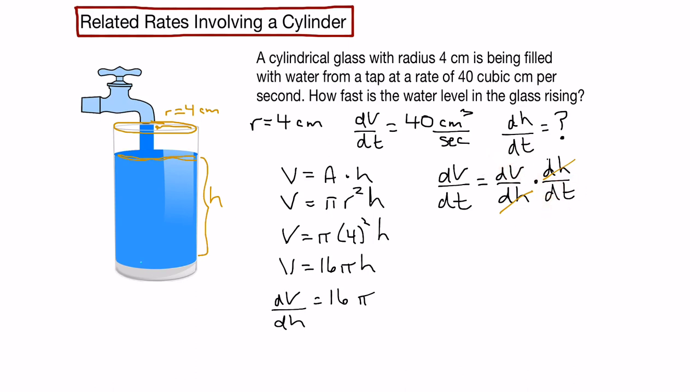So now we can just substitute change in volume with respect to time as 40 centimeters cubed per second. So I'll just write the number for now. Leave the units out for the moment. We've got change in volume with respect to height. That's 16 pi. So we can put that in there, 16 pi. And then we've got dh/dt, or the change in height with respect to time. That's what we want to find out. So we'll leave that in there. dh/dt.